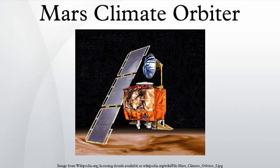The Mars Climate Orbiter bus measured 2.1 meters tall, 1.6 meters wide, and 2 meters deep. The internal structure was largely constructed with graphite composite aluminum honeycomb supports, a design found in many commercial airplanes. With the exception of the scientific instruments, battery, and main engine, the spacecraft included dual redundancy on the most important systems. The spacecraft was three-axis stabilized and included eight hydrazine monopropellant thrusters. Orientation was determined by a star tracker, two sun sensors, and two inertial measurement units.